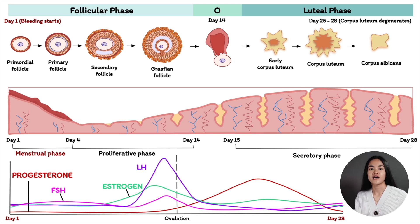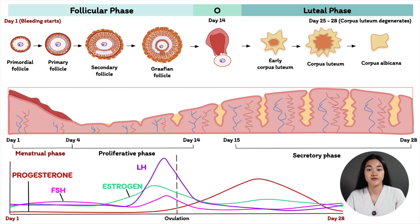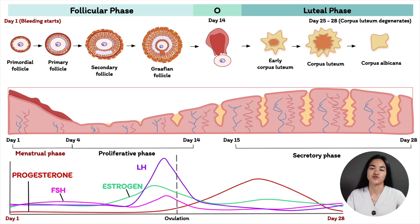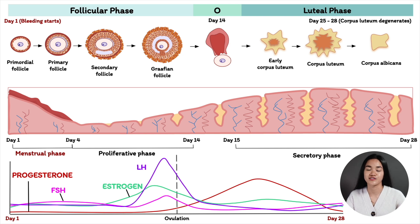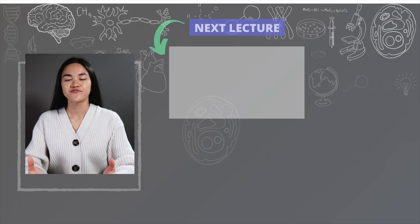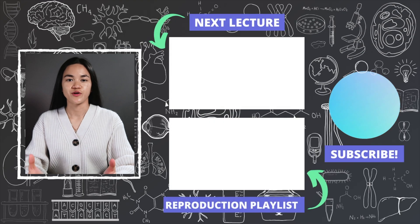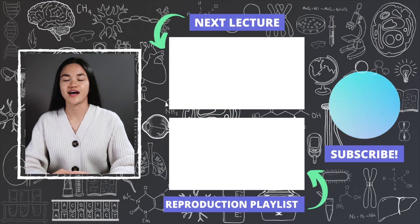The start of the cycle is day one of menstruation, when bleeding starts — and so that is the menstrual cycle. In the previous lectures, we covered this in great detail in the ovulation, ovarian cycle, and uterine cycle lectures. If you'd like a refresher, go ahead and check those lectures out.